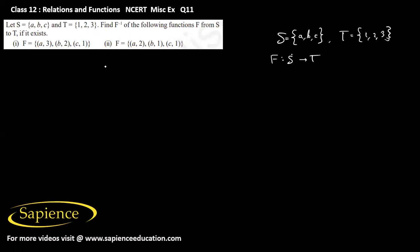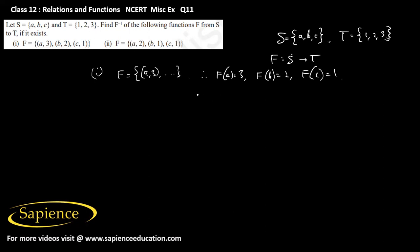In the first case, the function f contains the ordered pairs (a, 3), (b, 2), (c, 1). So f(a) = 3, f(b) = 2, and f(c) = 1. For different elements, the images are also different.